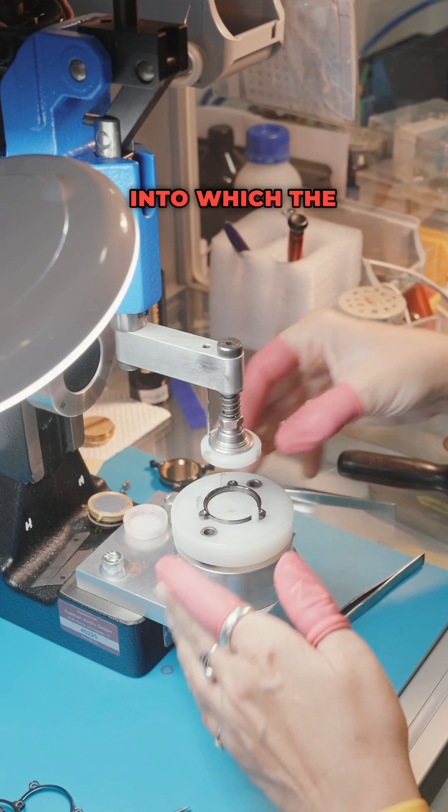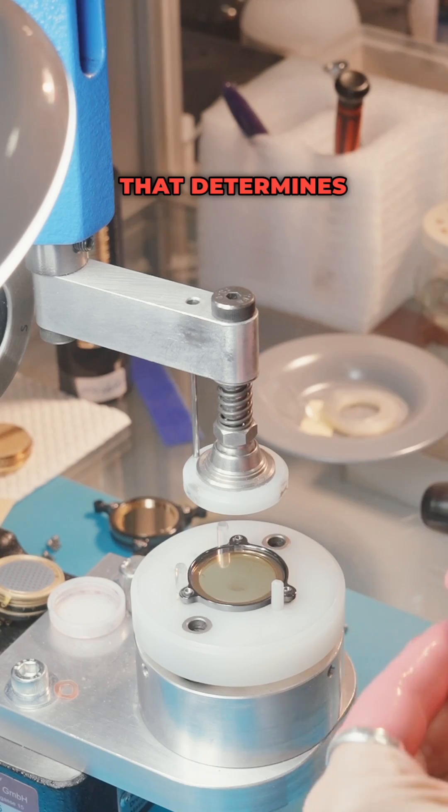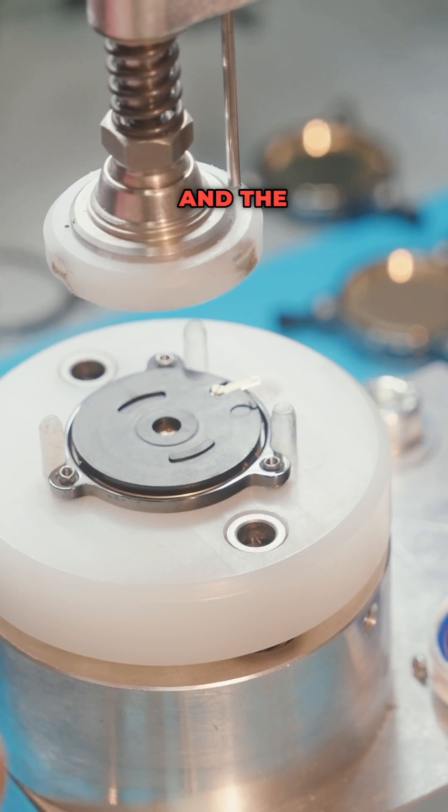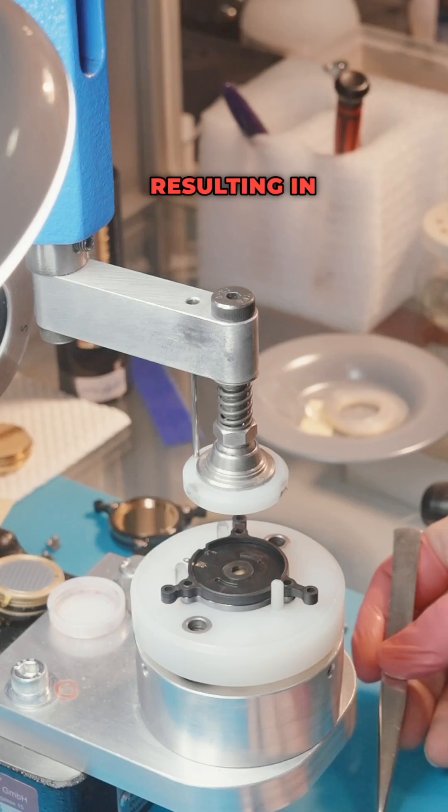Siggy starts with a ceramic ring into which the diaphragm is inserted. This is followed by a spacer ring that determines the distance between the electrode and the diaphragm. This also creates insulation between these two components, resulting in a capacitor.